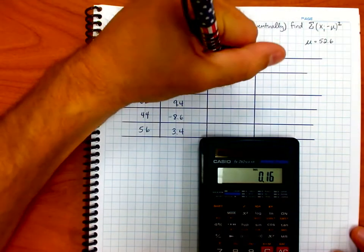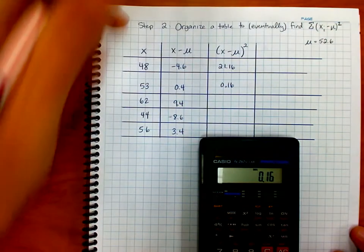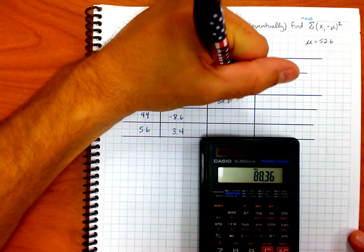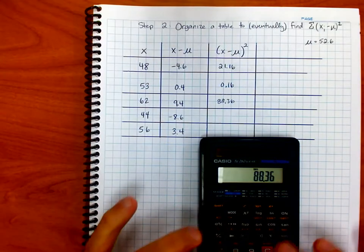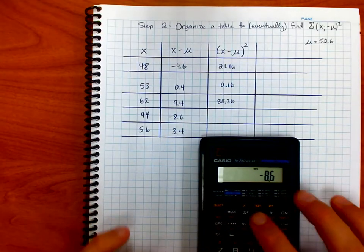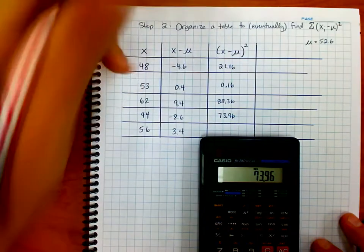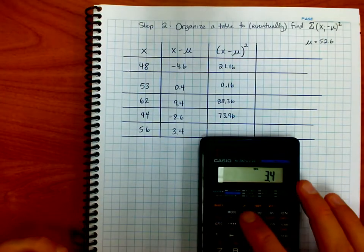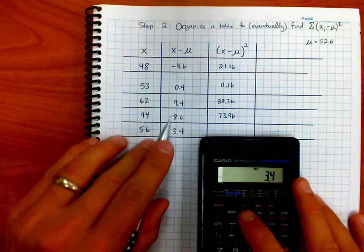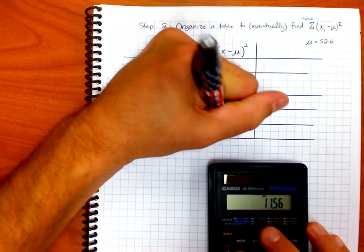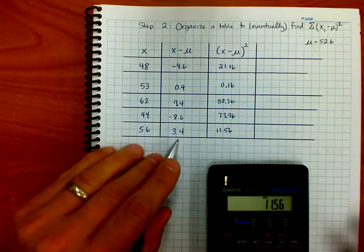I'm going to take 0.4, I'm going to square it, that gives me 0.16. I'm going to take 9.4 and square it, that gives me 88.36. That's a big number. I'm going to take negative 8.6, I'm going to square it, that gives me 73.96. By the way, notice how they're all positive here. That's because when you square a negative number, when you multiply a negative times a negative, it gives you a positive. This is 11.56 when you square it.